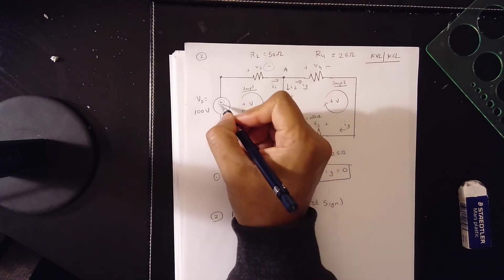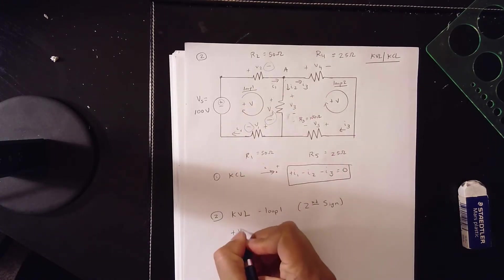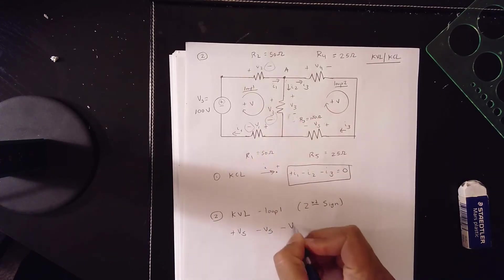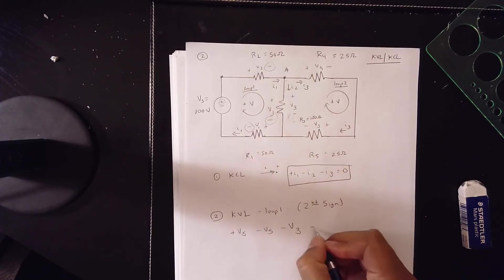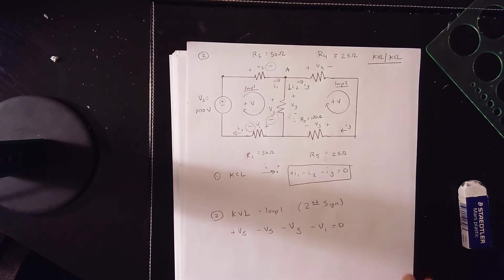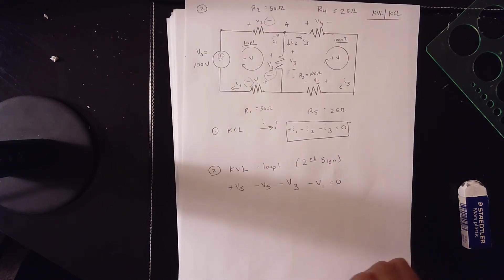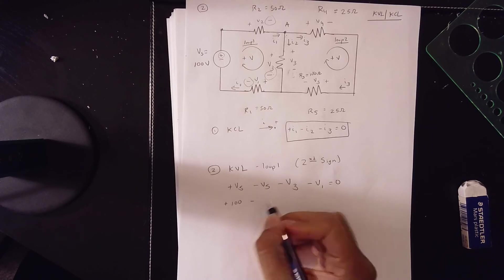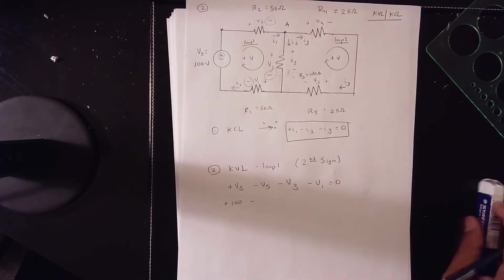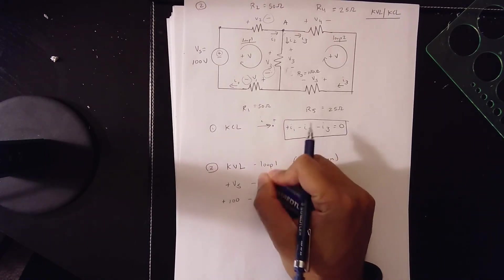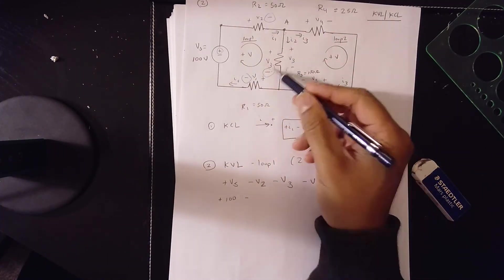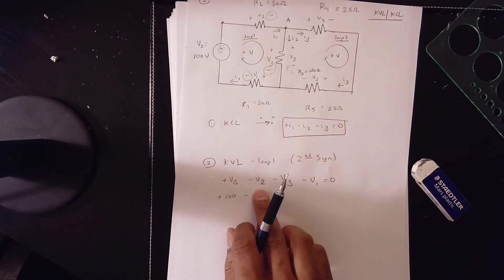So plus Vs minus V2 minus V3 minus V1 is equal to 0. Now, how do we do this? Well, Vs is obviously 100 volts plus 100. This is V2. This is not Vs. I apologize. So it's plus Vs minus V2 minus V3 and minus V1. That was an error I made.